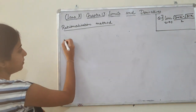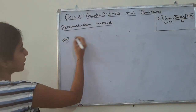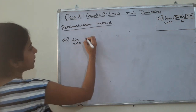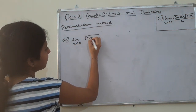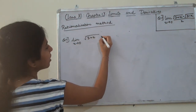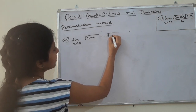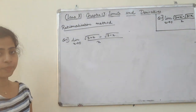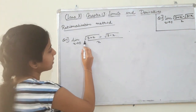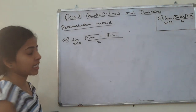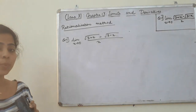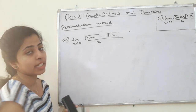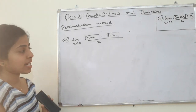Question 1: Limit as x tends to 0 of [root(3 + x) minus root(3 − x)] divided by x. This question involves a radical sign, so we use the rationalization method.